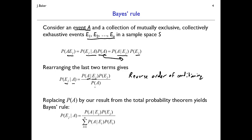We can also note that the probability of A in the denominator was computed a couple of slides ago using the total probability theorem with the same setup. So we can substitute that formula into the denominator. Now on the right-hand side, all we have are probabilities of the mutually exclusive collectively exhaustive events E, and conditional probabilities of A given those E's. This denominator term using the total probability theorem is one of the reasons why Bayes' rule often shows up together with the total probability theorem.